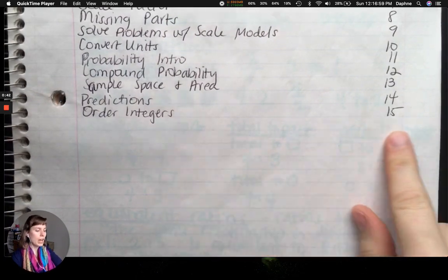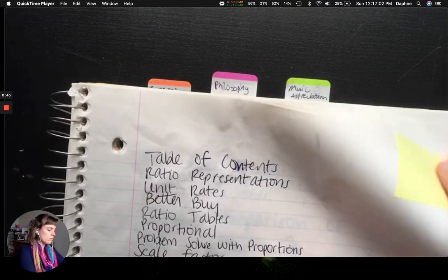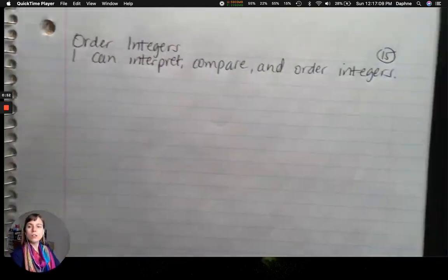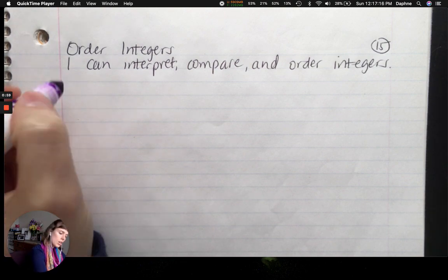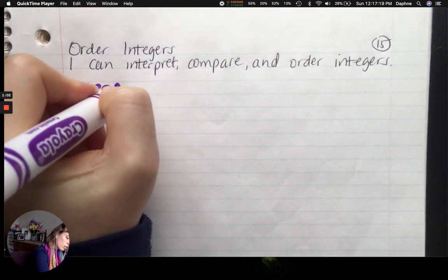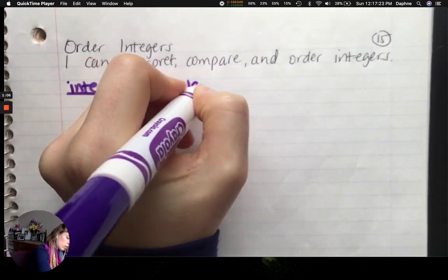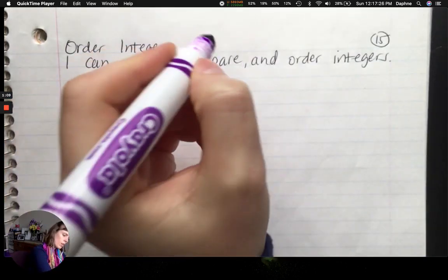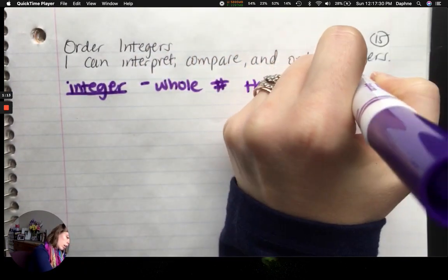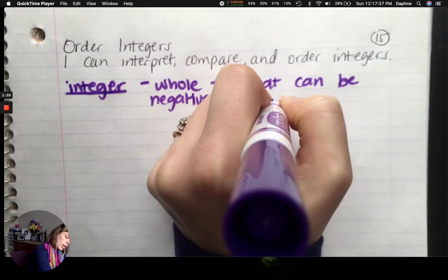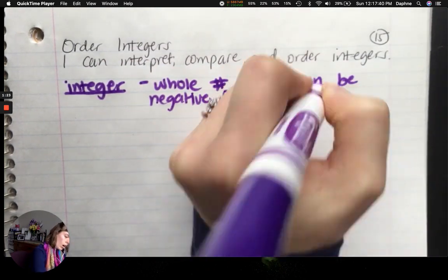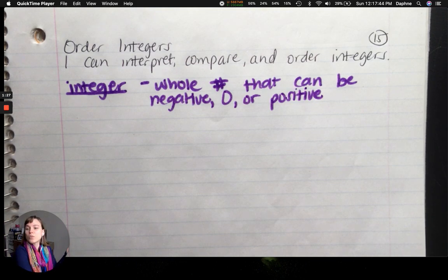All right, so we are on order integers and we are now on page 15. There is our title and our learning target. We're going to start out by defining the word integer. So an integer is a whole number that can be negative or it could be zero or positive. So we've dealt with positive whole numbers a lot. That's what you've seen your whole life so far. Now we're going to introduce those negatives in there as well.